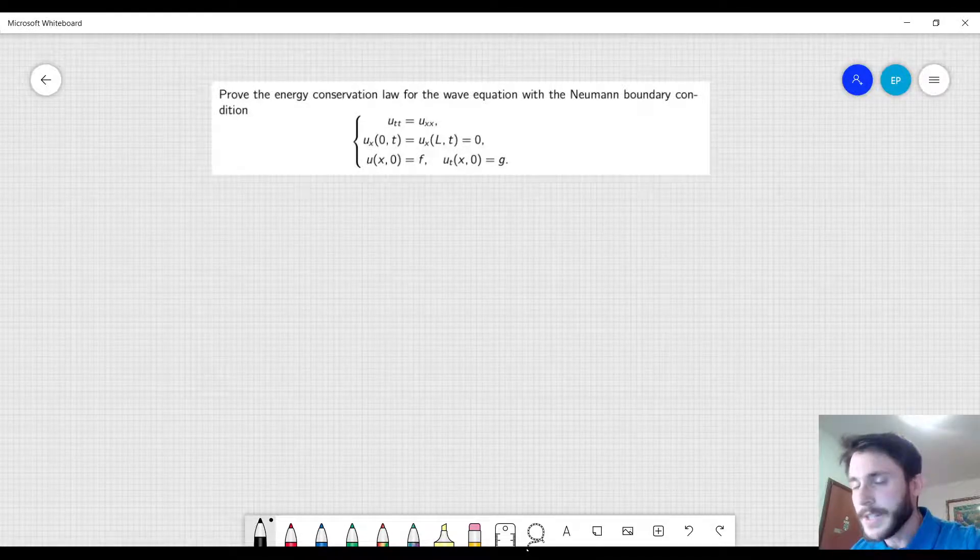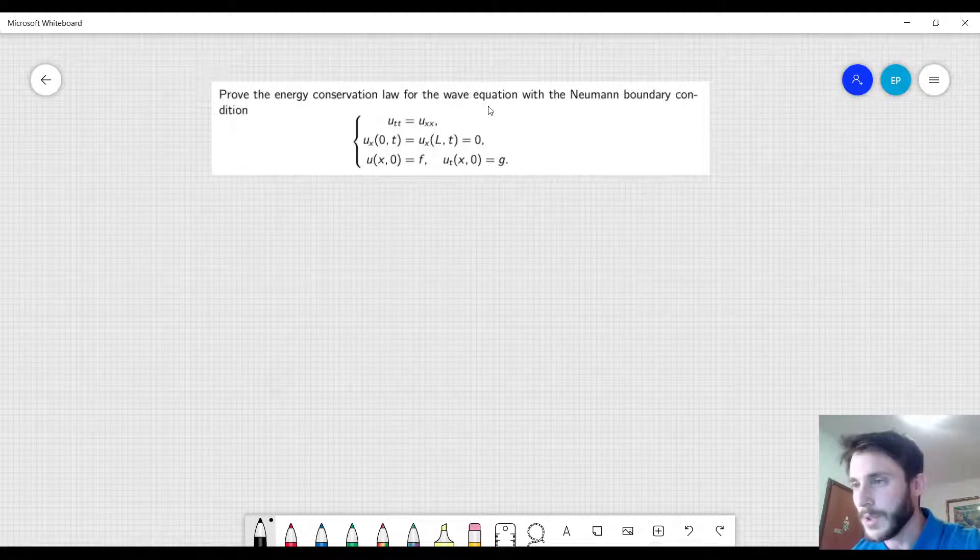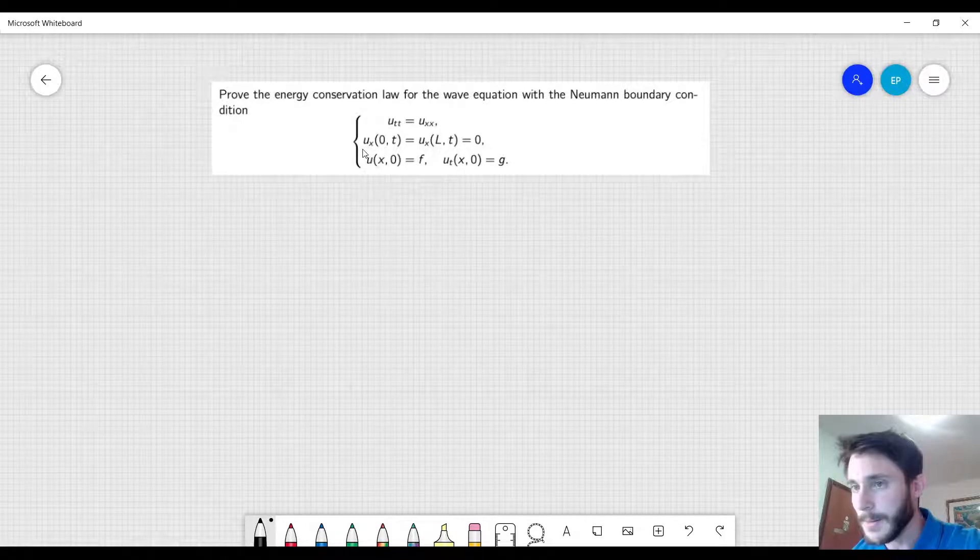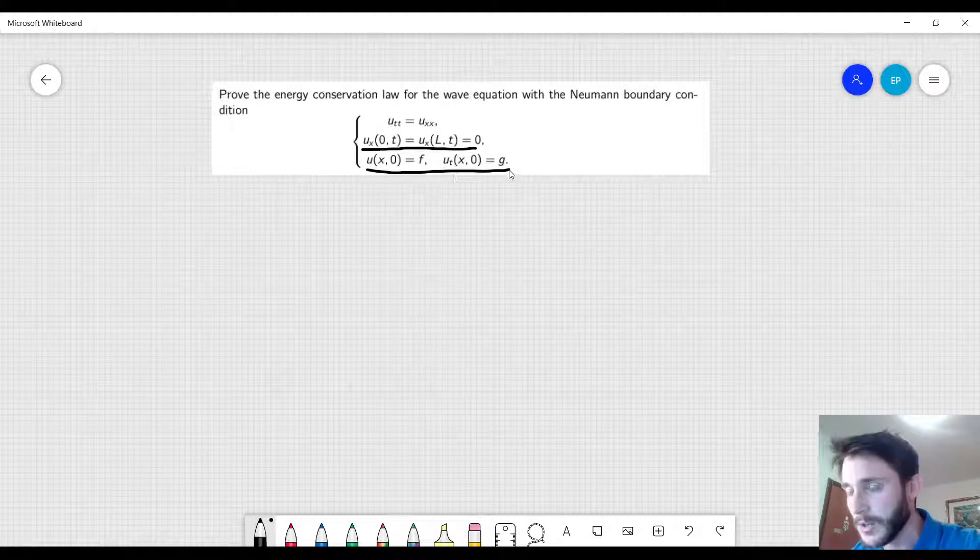This problem requires proving the energy conservation law for the wave equation with Neumann boundary conditions. We have these boundary conditions which are called the Neumann boundary conditions and also some initial conditions. We have a homogeneous wave equation here.